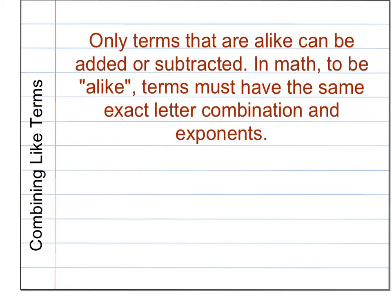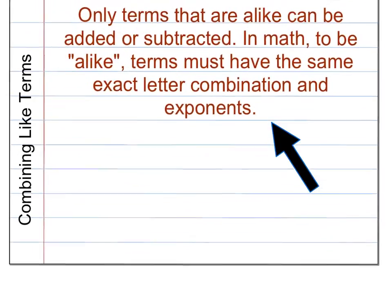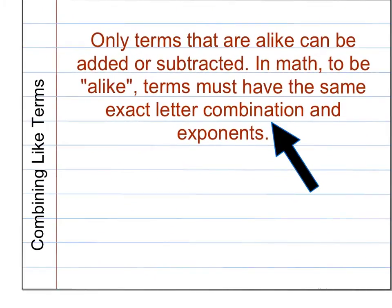So in math, when we combine like terms, the important thing to remember is that only terms that are alike can be added or subtracted. So to see which terms are alike, the terms must have the same exact letter combination and the same exact exponents. And that's what we're going to be looking at in the next few problems.